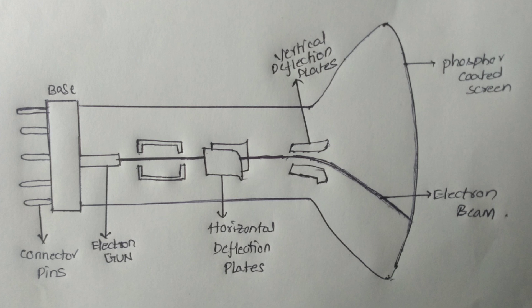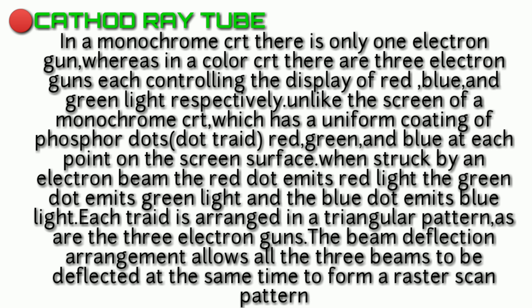Using phosphor dots, we produce the glow. There are two types of CRT: 1. Monochrome CRT and 2. Color CRT. In the monochrome CRT, only one type of electron gun is used producing one color. In the color CRT, we have three electron guns, each producing one color.